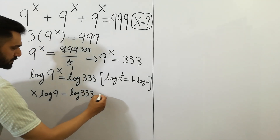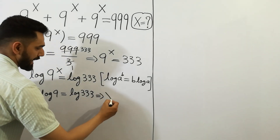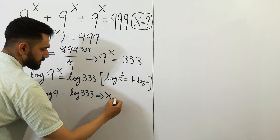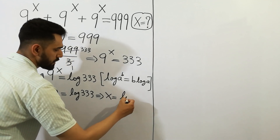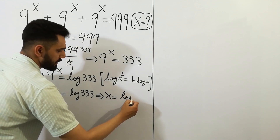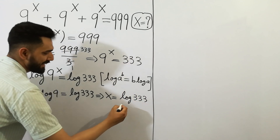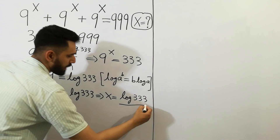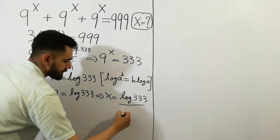And next, x is equal to log 333 divided by log 9.